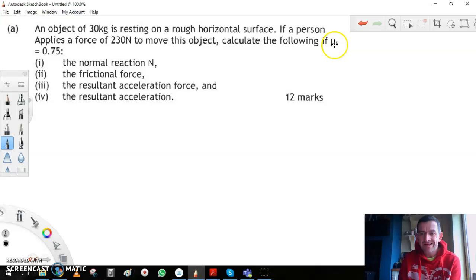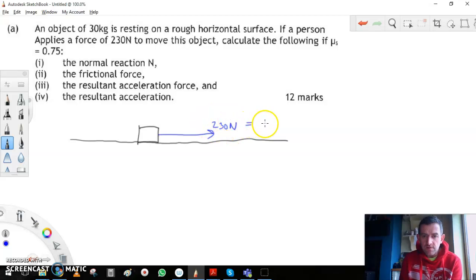So we do a sketch here. Here's our object and here's our rough surface, and then somebody comes around and pulls here with a force of 230 newtons. So that's equal to the pulling force F_P.